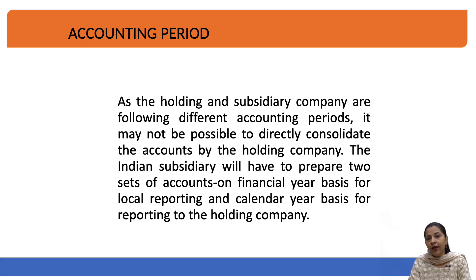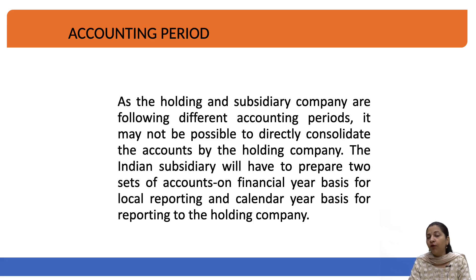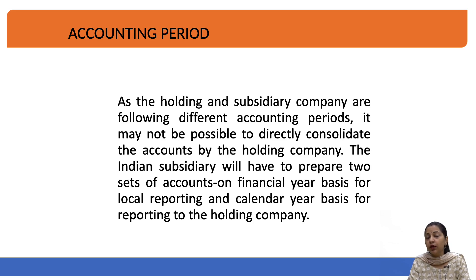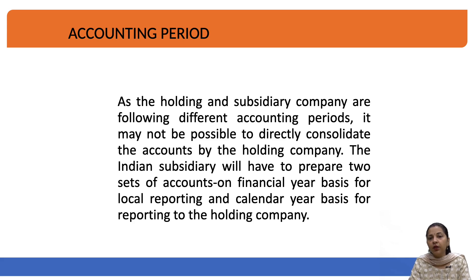A calendar year would be January to December and a financial year would be April to March. From this example, we understand that the accounting period must be 12 months; otherwise there will be trouble reporting the results of the company. You will not be able to consolidate results when the holding company follows a different cycle from the subsidiary. It is advisable to follow a 12-month period — either a calendar year or a financial year. This is the accounting period concept.